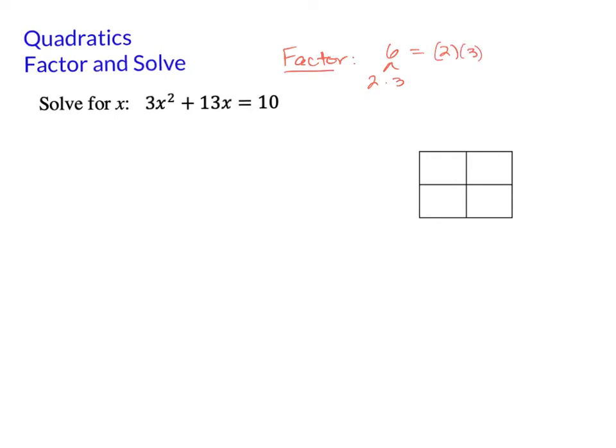To solve for something means you want an answer. You're trying to find what number of x makes this statement 3x squared plus 13x equal to 10. So what value of x makes this statement true? But before you get there, you've got to get x by itself. And right now, x is all mucked up in this quadratic equation. So before we get x by itself, we have to do a few things.